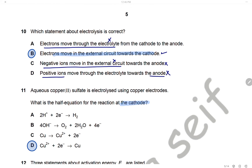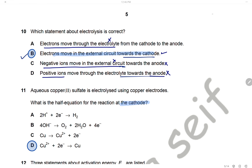Question 10: Which statement about electrolysis is correct? Electrons move through the electrolyte — wrong; electrons move through the wire. Electrons move in the external circuit toward the cathode — correct; electrons move from the anode to the cathode. Negative ions move in the external circuit — no, negative ions move in the electrolyte. Positive ions move toward the anode — wrong. The answer is B.